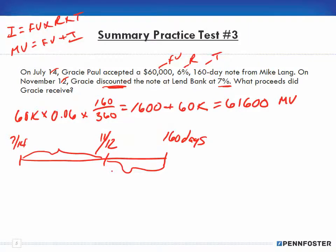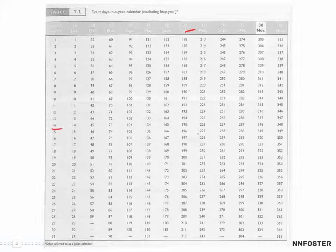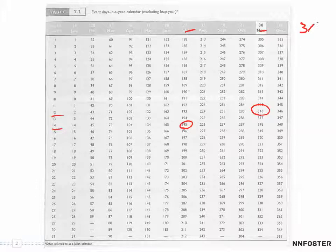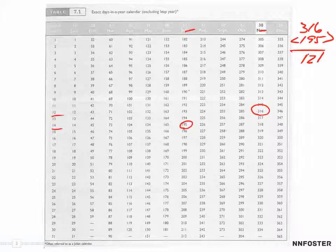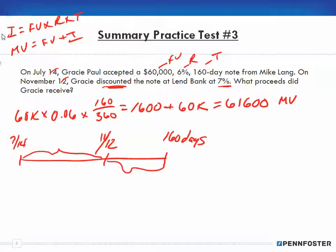We need to know the discount period in days. July 14th is day 195, and November 12th is day 316. So 316 less 195 equals 121 days that were used.